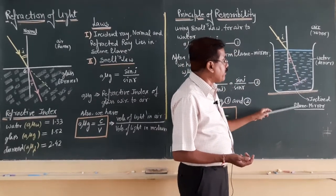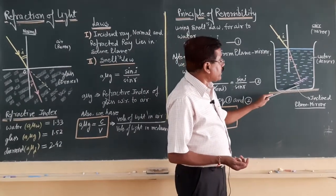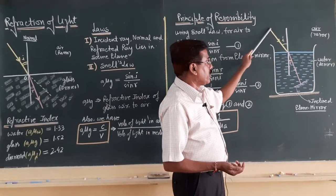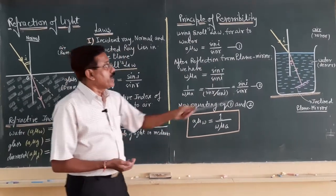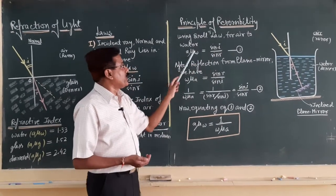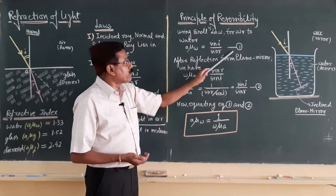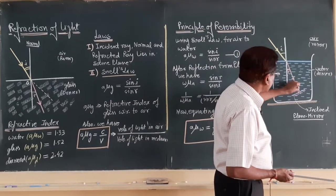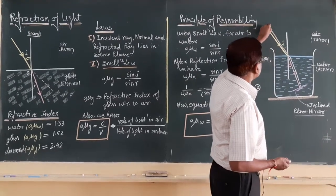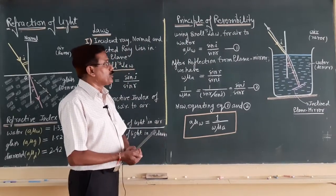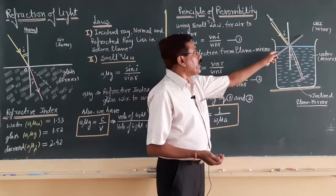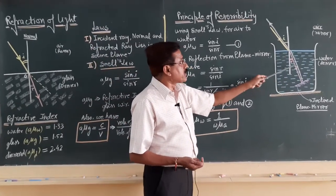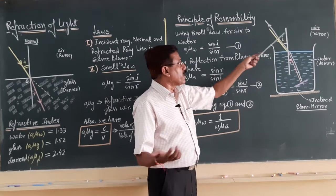We have arranged an inclined plane mirror inside the beaker, adjusting its inclination so that the refracted ray is reflected back along the same track. For the first case, when light traverses from air to water, applying Snell's law gives: a-mu-w = sin i / sin r — equation 1. After reflection from the plane mirror, when light reverses back, it traverses from water to air. Applying Snell's law again gives: w-mu-a = sin r / sin i, because r now acts as the angle of incidence and i as the angle of refraction.